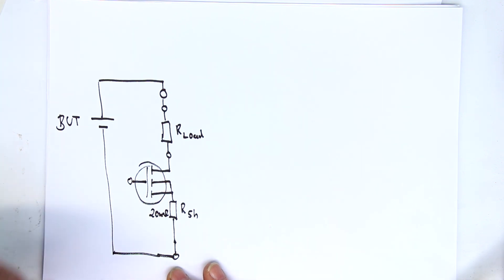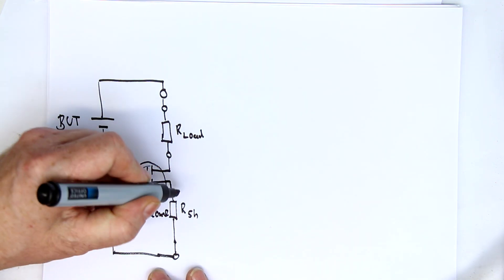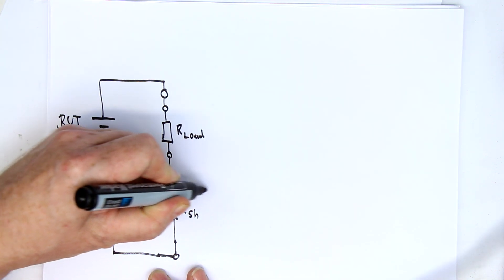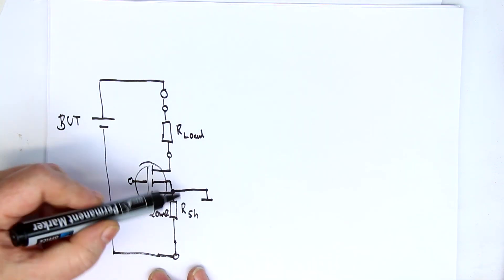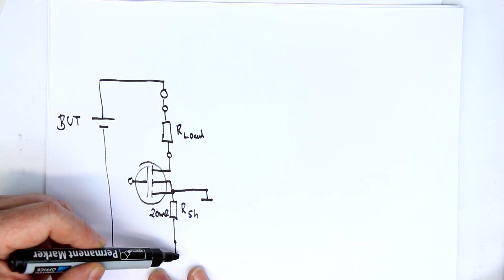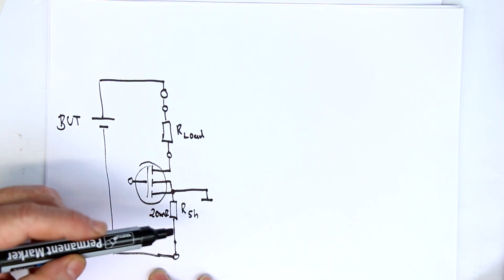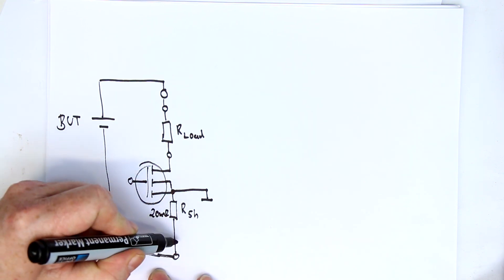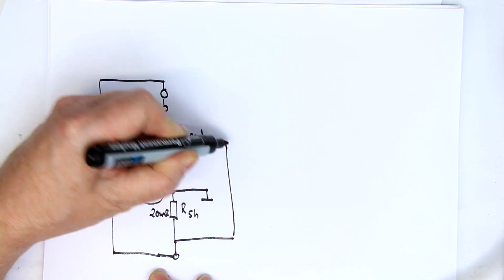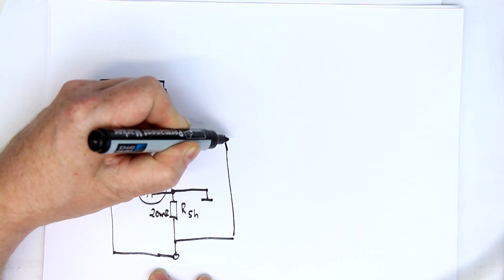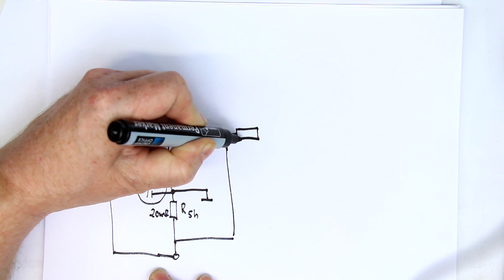Then comes our shunt resistor of 20 milliohms and then finally the screw terminal to the negative battery terminal. But now comes an interesting point. You might suggest usually the negative pole of the battery is connected to the circuit ground. But here it's not. It's the upper point of the shunt resistor. That means our shunt resistor, if we tap off the voltage proportional to our current here at this point, this is a negative voltage. We'll see in a minute why they did it that way.